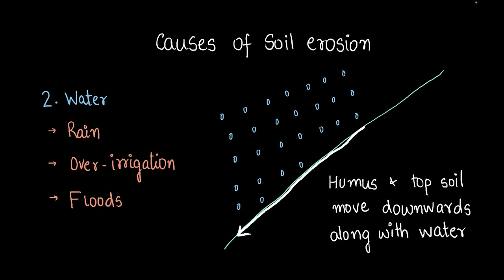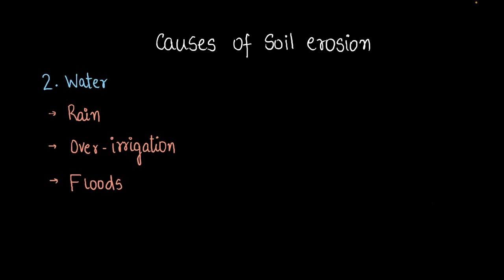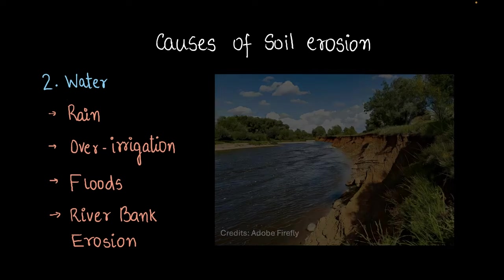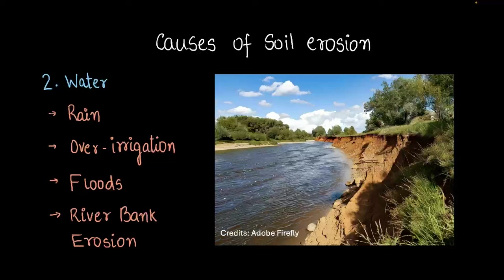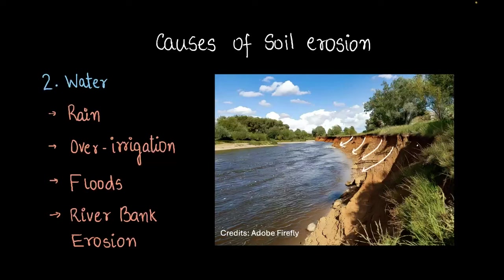The other case where water can cause soil erosion is with rivers. Rivers can erode away the banks of the river. Look at this picture here. Don't you see that the walls of the river here, right here, they seem to have been eroded by the water? Yes, that's what happens when a river starts flowing very fast. It carries mud and soil along with it and that causes erosion. So we saw how water can cause soil erosion.